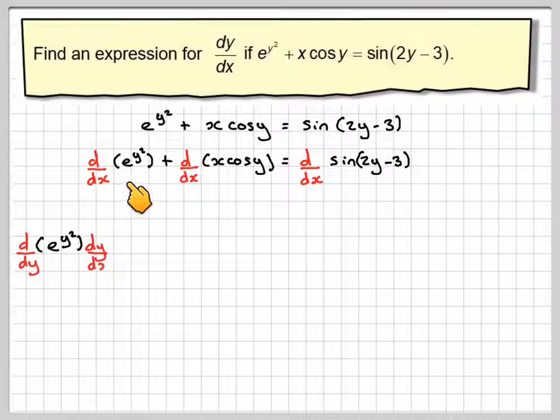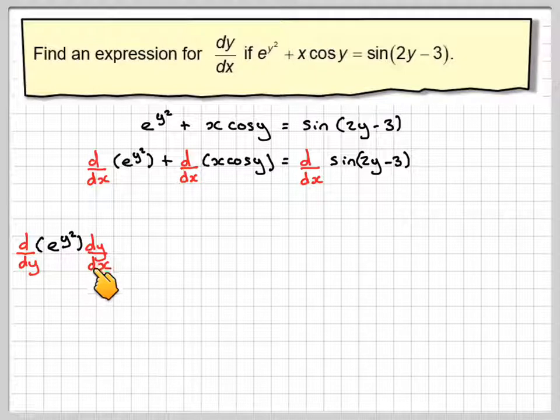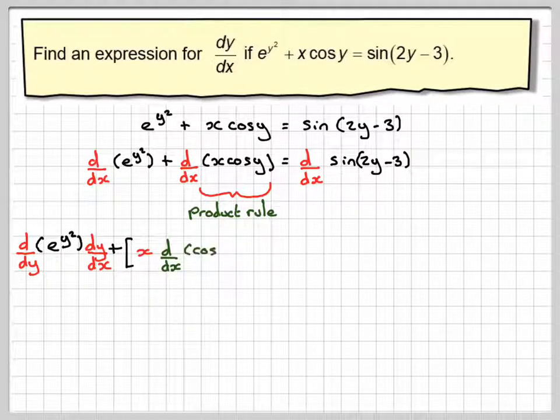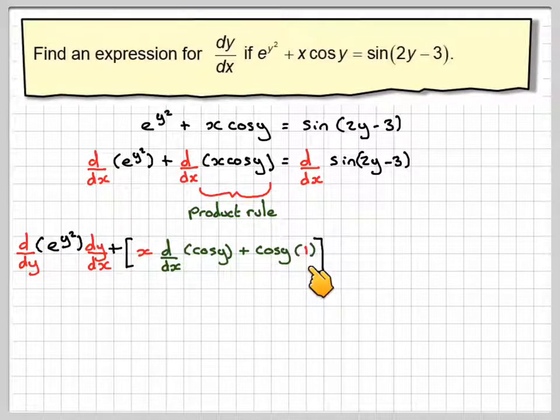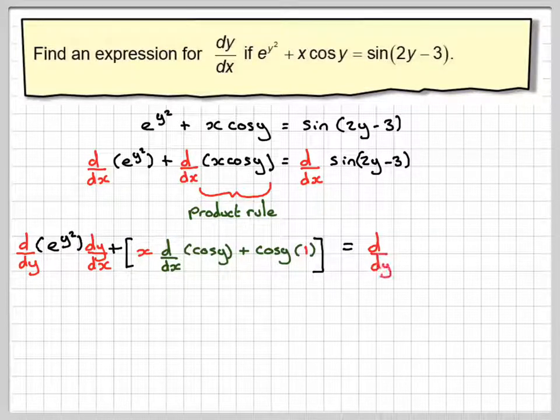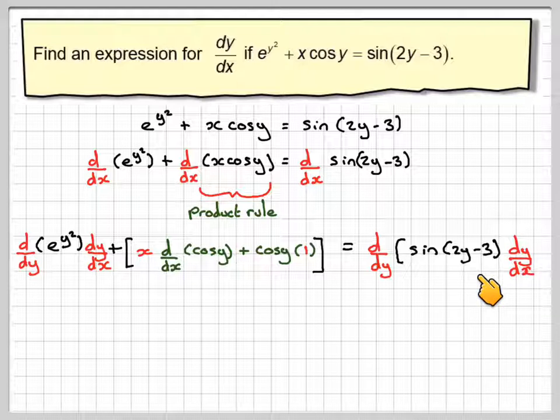So we can't take d/dx of this so we take d/dy of e to the y squared times dy/dx. This is going to involve the product rule. So it's going to be x times d/dx of cos y plus cos y times the differential of x which is 1. And that's going to be d/dy of sine 2y minus 3 times dy/dx.